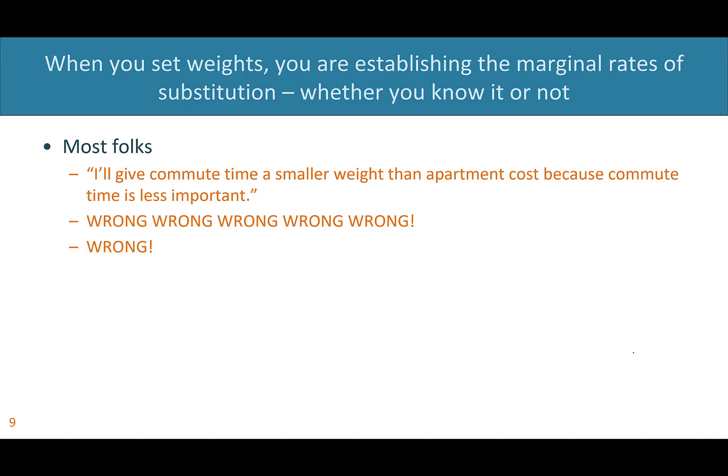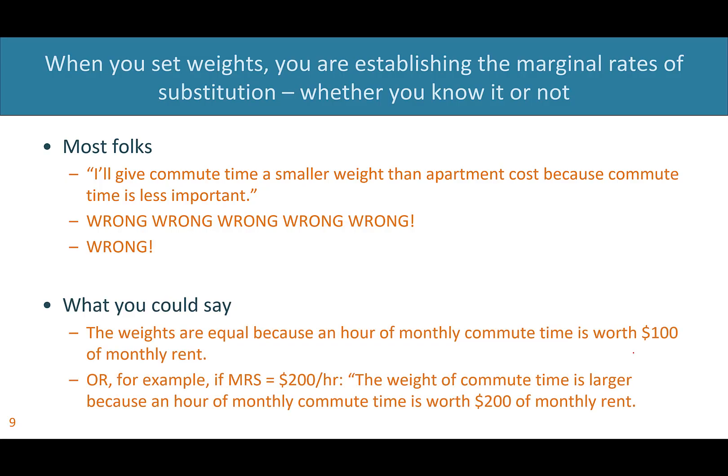When you set the weights and normalize as we did, you are establishing the marginal rates of substitution whether you know it or not. So you might as well do it the other way around: set the marginal rates, which are the meaningful measures of the trade-off, and then derive the weights. The weights are equal not because commute time and rent are equally important, but because an hour of monthly commute time is worth $100 of monthly rent — that's what makes the weights equal.